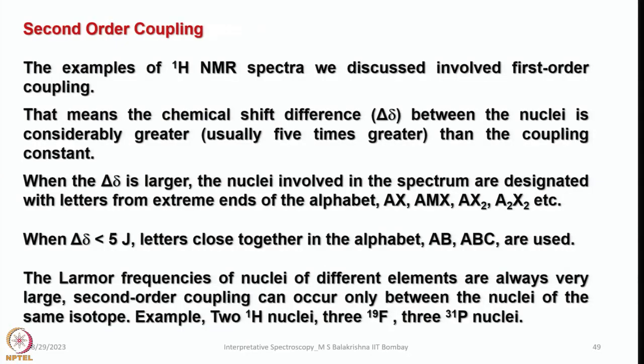Second order coupling — we call it as such. The examples of 1H NMR spectra discussed so far involved first order coupling. That means the chemical shift difference, which we call delta-delta between the nuclei, is considerably greater than the coupling constant — usually 5 times greater. That means delta-delta is greater than J, then it is called first order coupling.